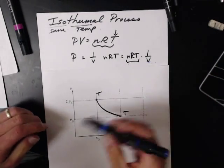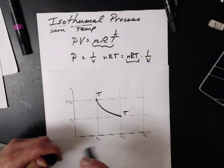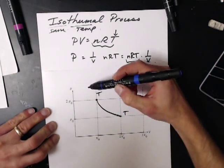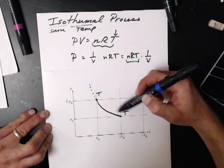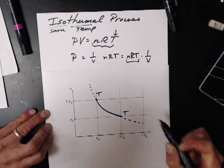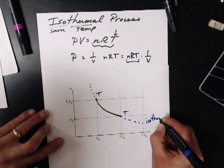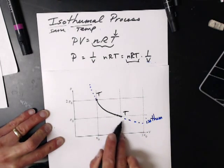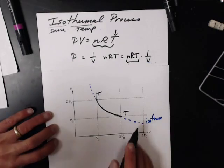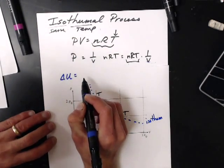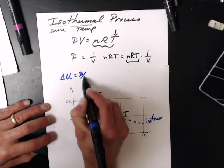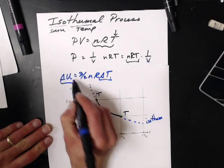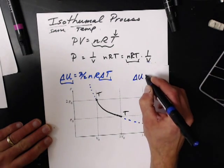So now, if my temperature's not changing, I have no delta T, so everything along here is the same T. If I extend this curve, this is what's known as an isotherm. Everything along this dotted line and along that black line is at the same temperature. So delta U equals 3/2 NR delta T — if delta T is zero, then delta U equals zero.